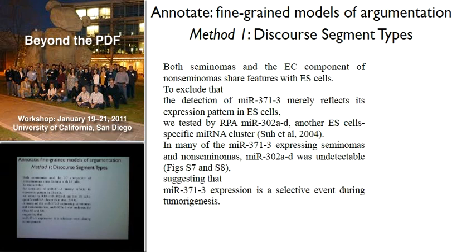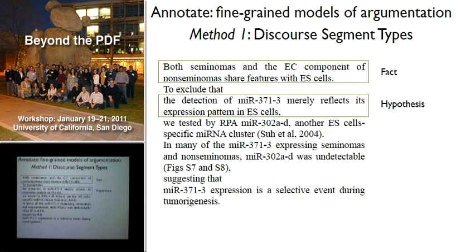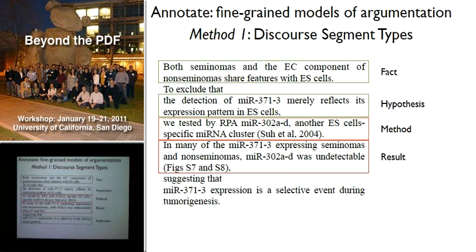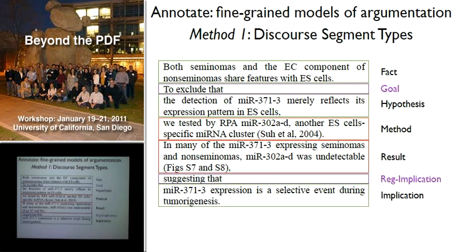Within a biological text, I'd like to argue this actually happens in the realm of a clause. A clause, for those not linguists, is something that essentially has one verb — so every verb does a little mental act. In this paper, for instance, you see a statement: 'seminomas and the EC component of non-seminomas share features with ES cells.' That is taken to be a statement of fact, accepted by the community. Then we get a hypothesis — something might be possible — and therefore we did this thing and found this result, and here is the implication. So every clause essentially has a small rhetorical sub-goal.